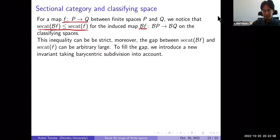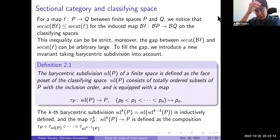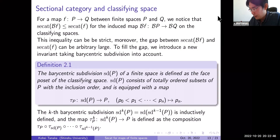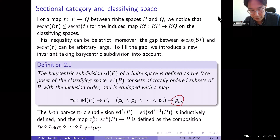The barycentric subdivision of a finite space P, denoted SdP, consists of chains with the inclusion order — in other words, SdP is defined as the face poset of the classifying space of P and consists of totally ordered subsets of P. It is equipped with a natural weak homotopy equivalence map tau from SdP to P, sending a chain to its greatest element p_n. We also define the k-th iterated barycentric subdivision inductively, with the corresponding map from Sd^k P to the original space as a composition.